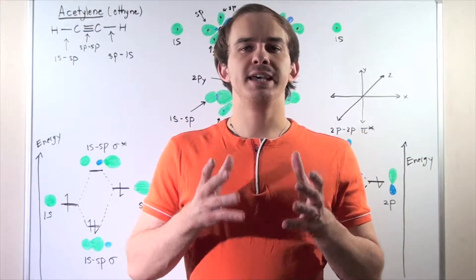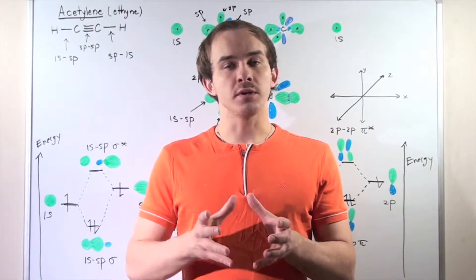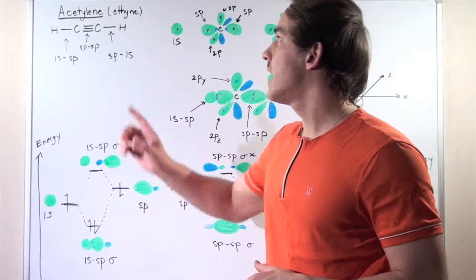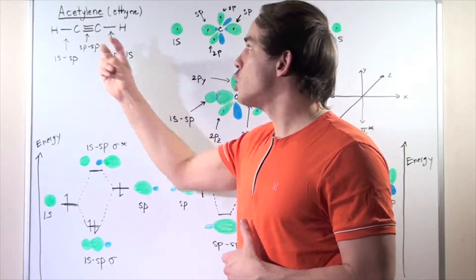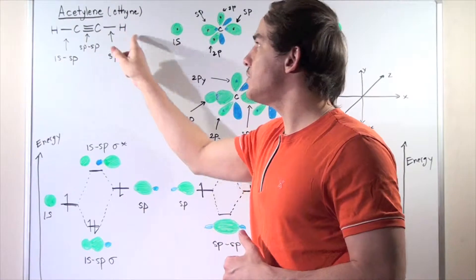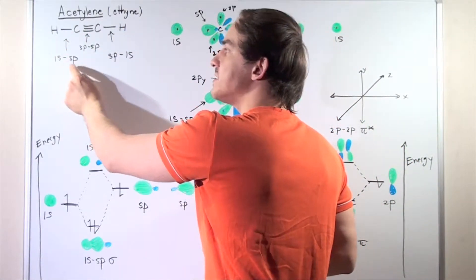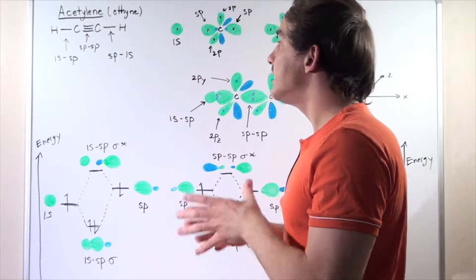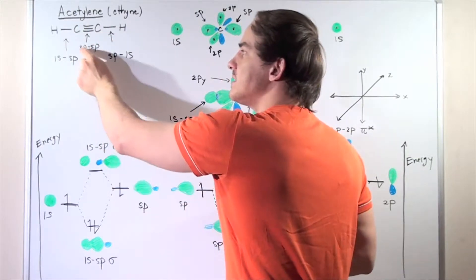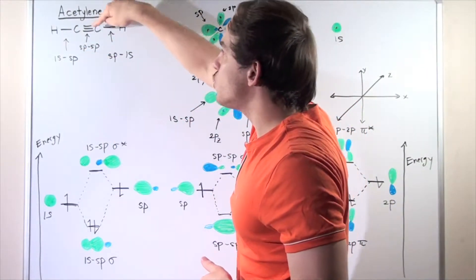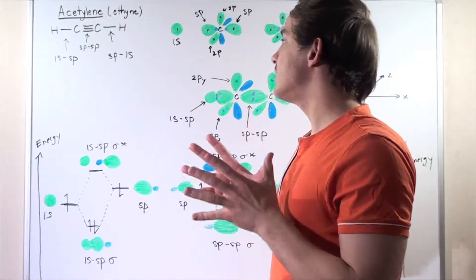In this lecture, we're going to begin our discussion on triple bonds, and we're going to build a molecular orbital diagram for the simplest alkyne known as acetylene, or ethyne. This compound is composed of two carbon atoms and two H atoms. The bonds between the carbon and the H are 1S-SP hybridized, and the sigma bond between the two carbon atoms is SP-SP hybridized. These two other bonds are the two pi bonds, as we'll see in just a second.